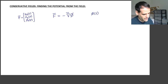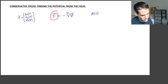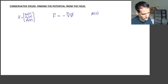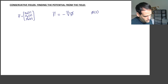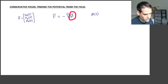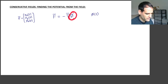Given any vector field, you will be able to find the associated potential. Just one small comment: there is one thing that we will never be able to find if we are given the field, and that's any constant that is added to the potential.